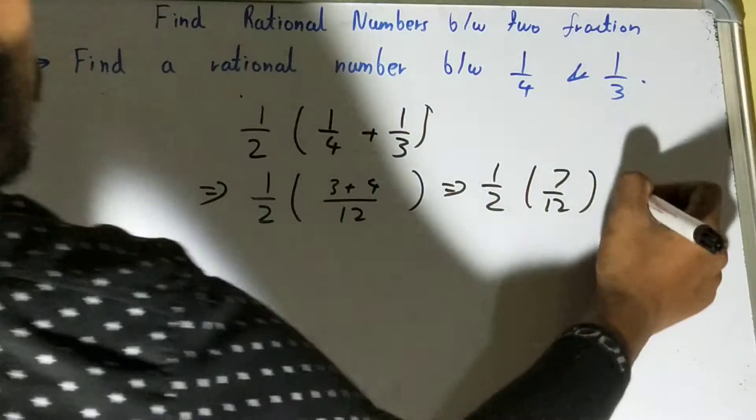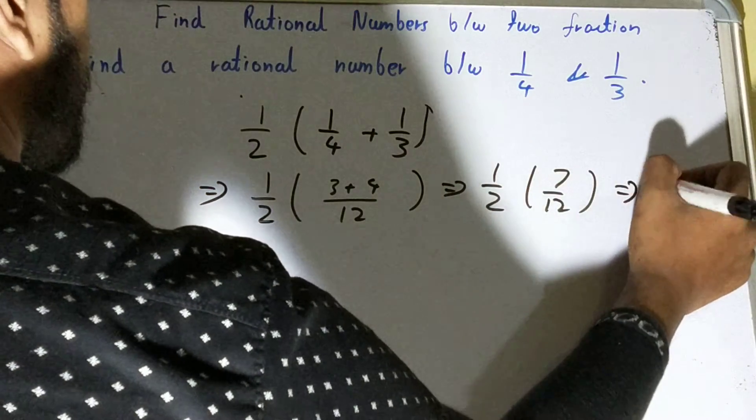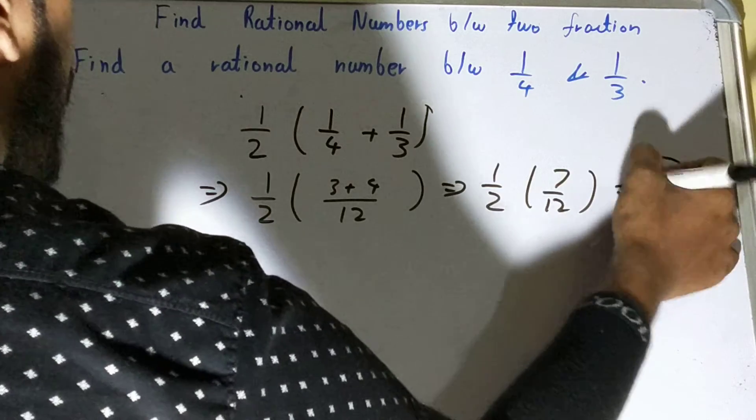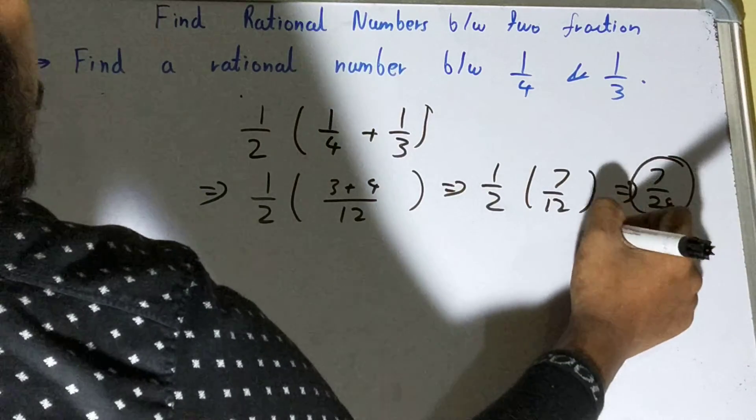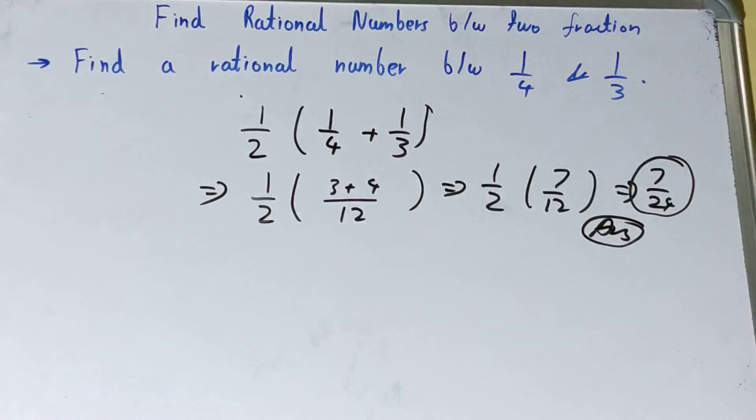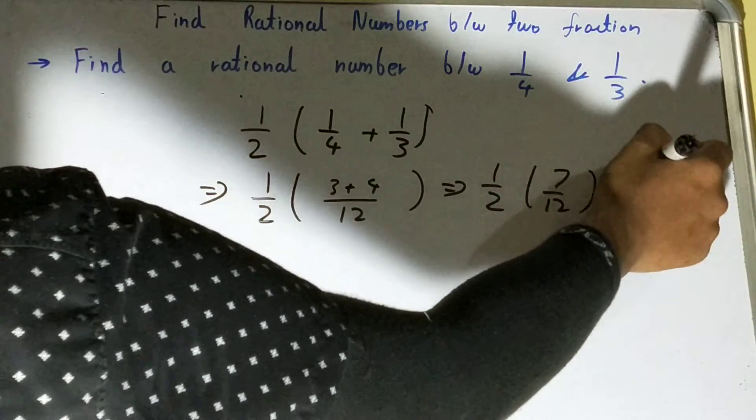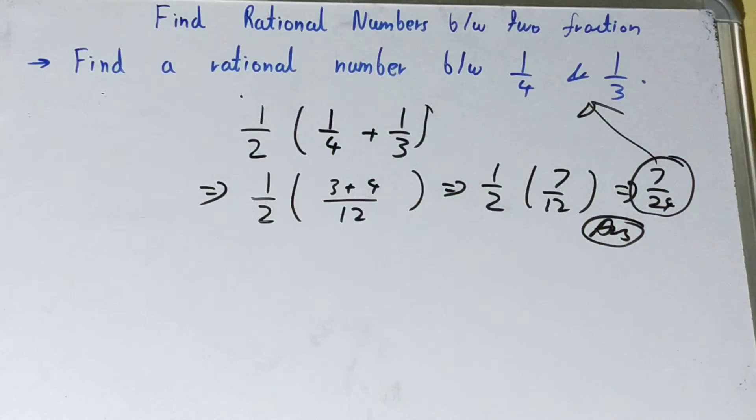On multiplying, you will get it as seven upon twenty-four, and that will be your new rational number that will exist between one by three and one by four.